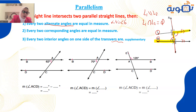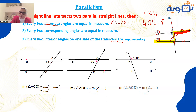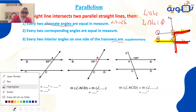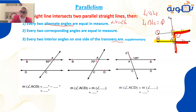Letter F is formed, meaning two corresponding angles. Angle 4 and angle 8 are equal because they are corresponding angles: angle 4 equals angle 8.